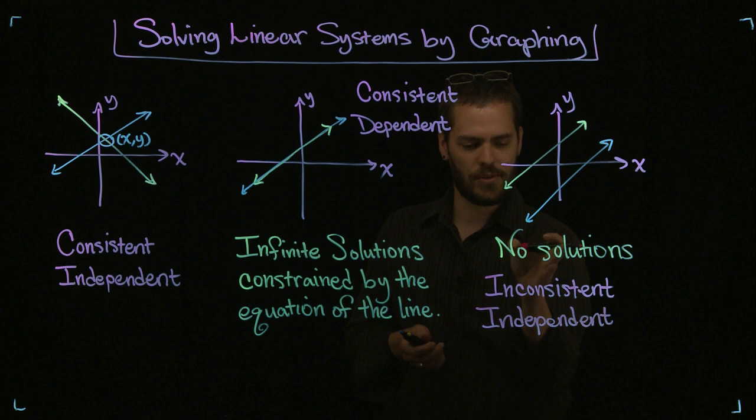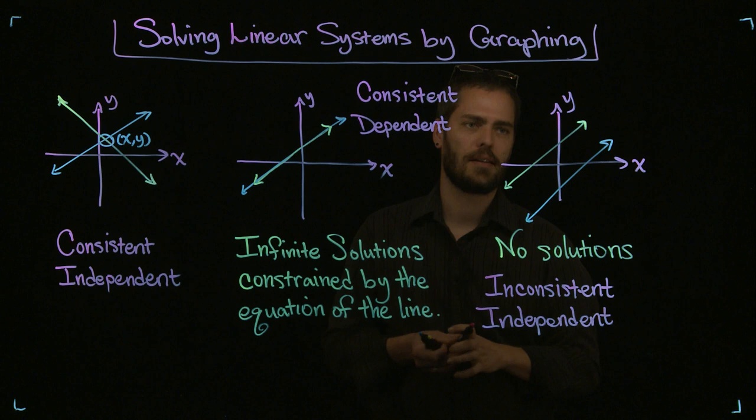There we go. So, whenever you have the case where the lines are parallel, you're looking at no solutions. And as far as vocabulary goes, the system is inconsistent and independent.